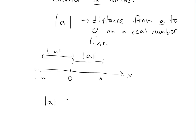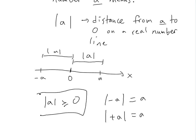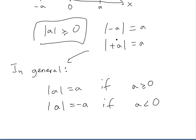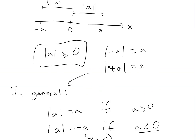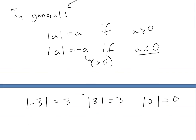So it's just a distance, and it's always greater than or equal to zero. The absolute value of negative A equals A, and the absolute value of positive A also equals A. We can generalize it by saying: absolute value of A equals A if A is greater than or equal to zero, but if A is less than zero, then the absolute value of A is negative A — because negative times negative becomes positive. For example, absolute value of negative three equals three, absolute value of three equals three, and absolute value of zero equals zero.